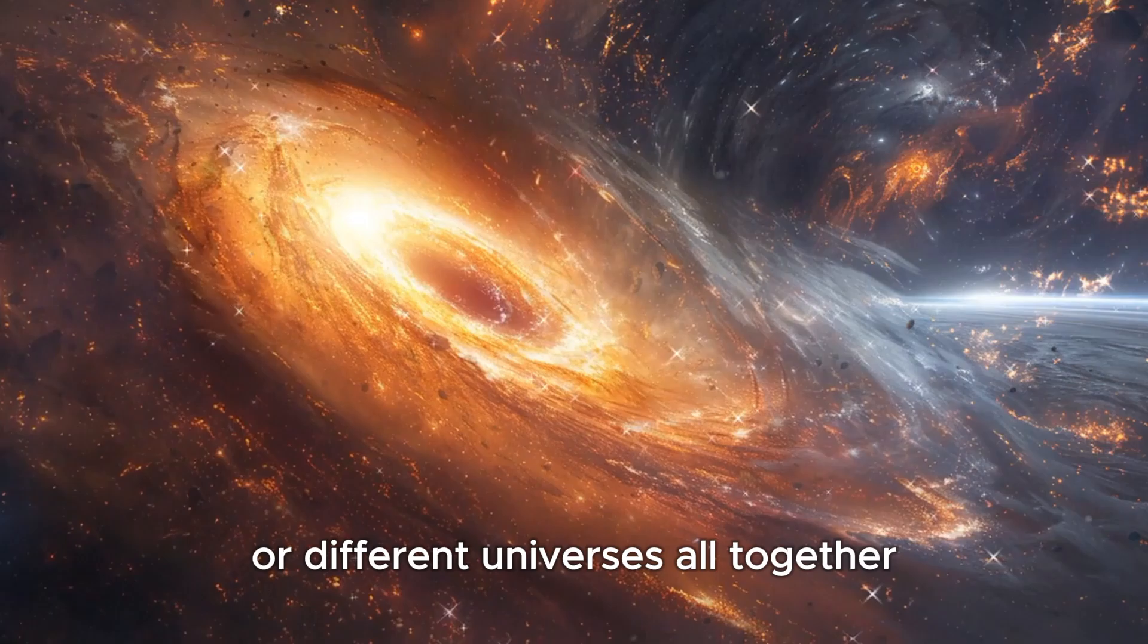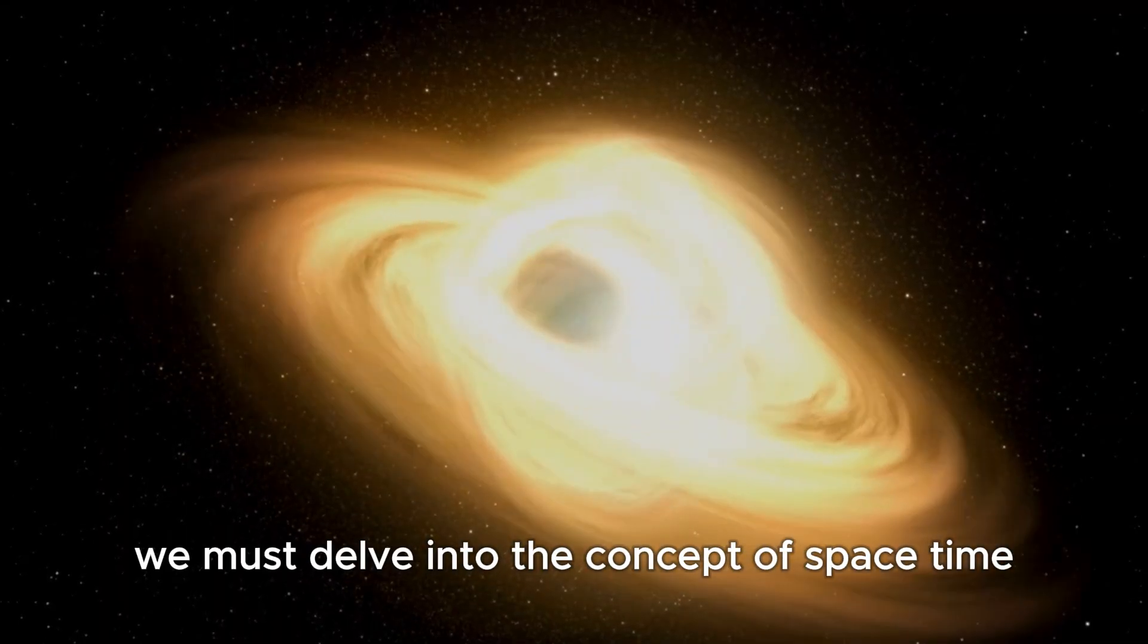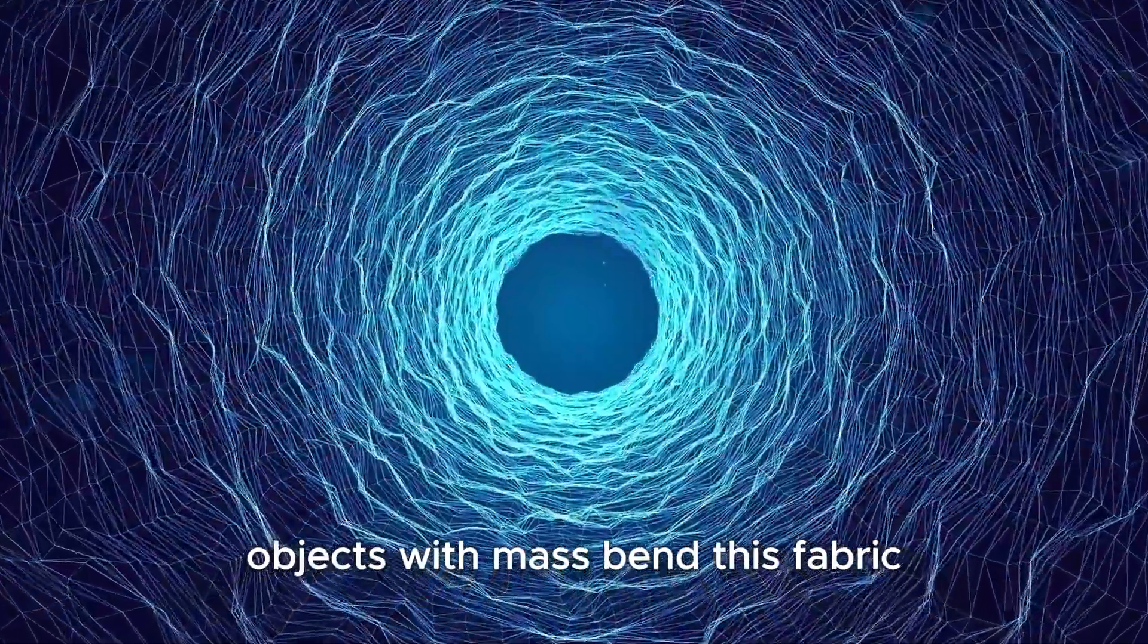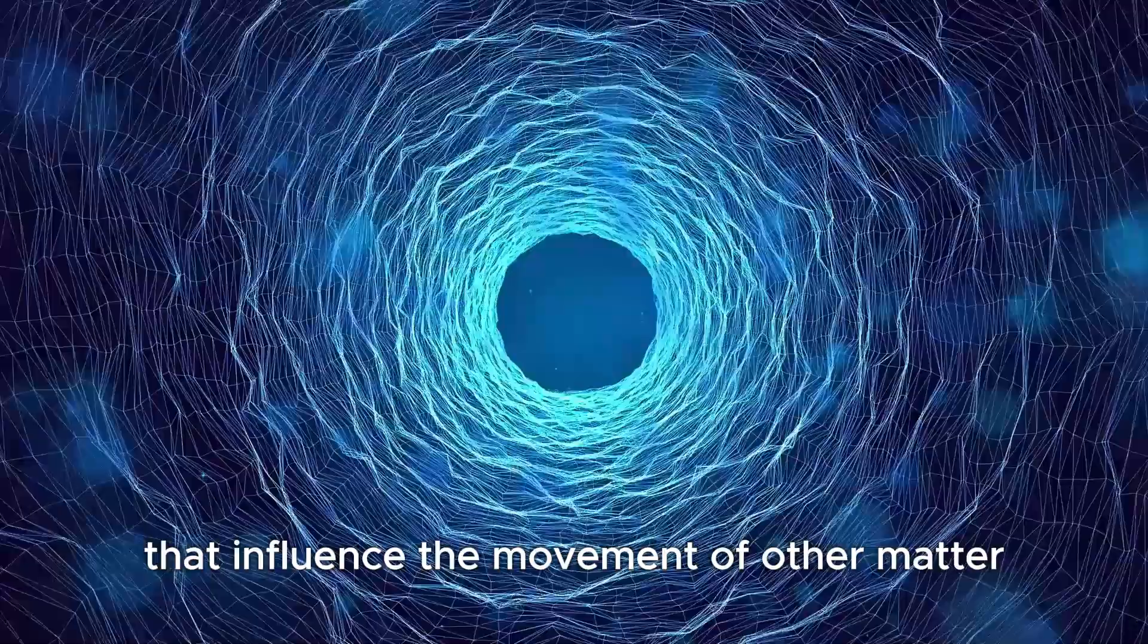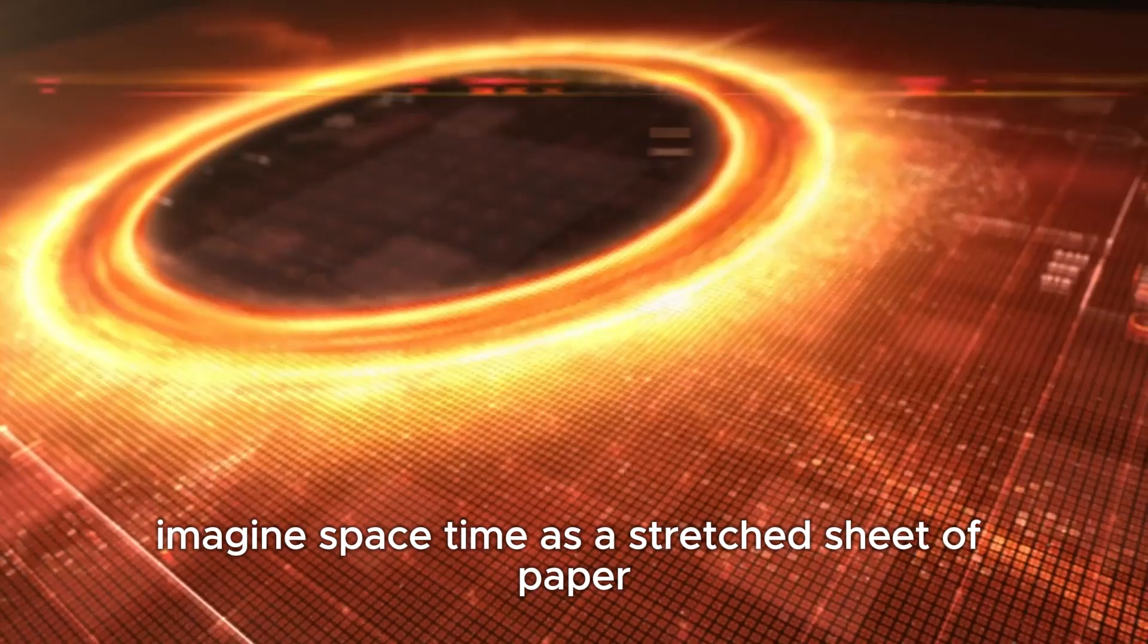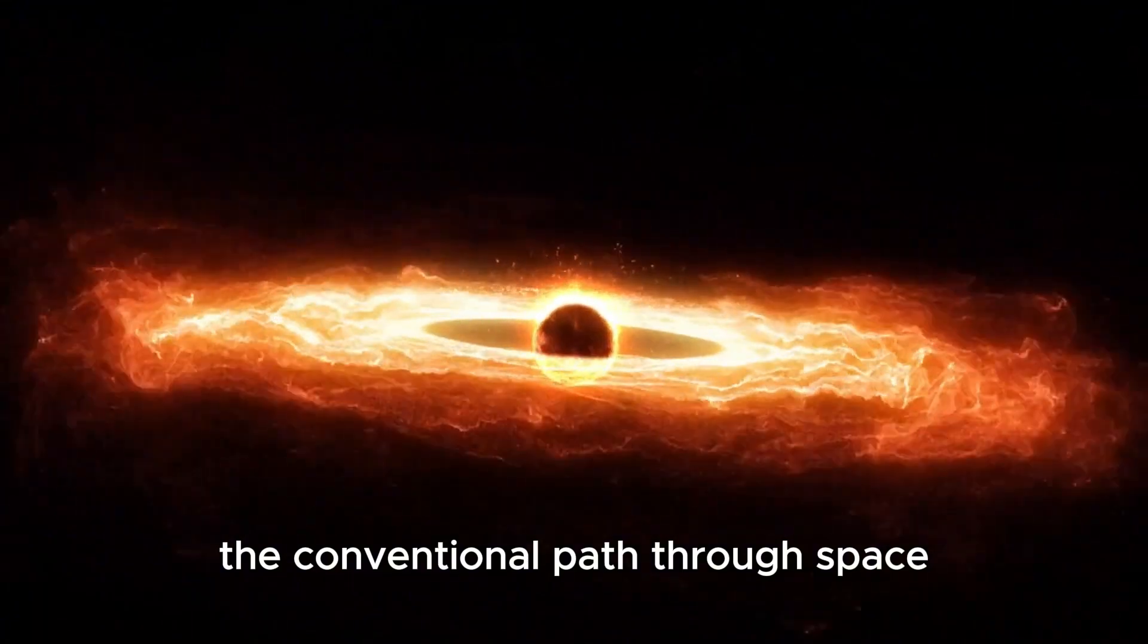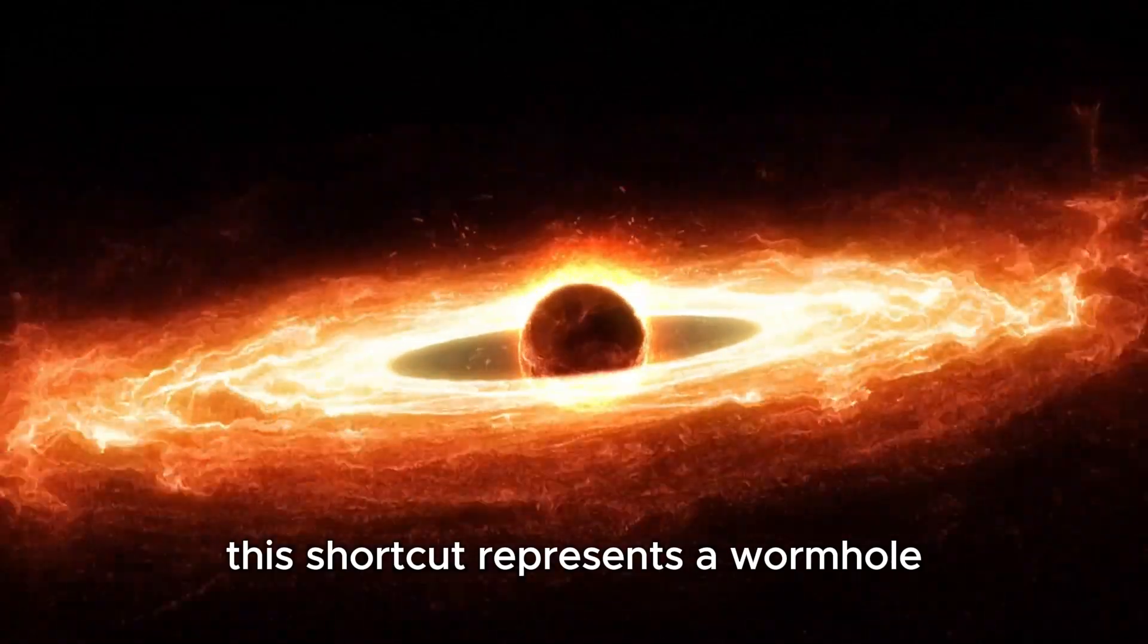To grasp this idea, we must delve into the concept of spacetime, which Einstein's theory treats as a four-dimensional continuum combining space and time. Objects with mass bend this fabric, creating gravitational effects that influence the movement of other matter. Imagine spacetime as a stretched sheet of paper. If two points are drawn and connected by a line, that line represents the conventional path through space. Now fold the sheet so the points touch. This shortcut represents a wormhole.